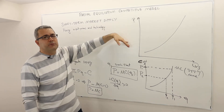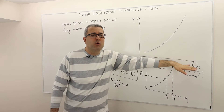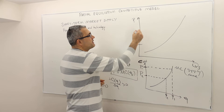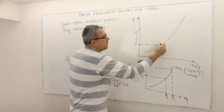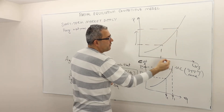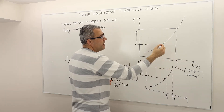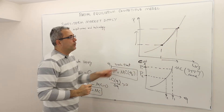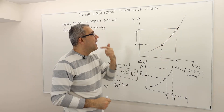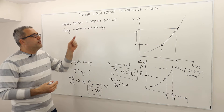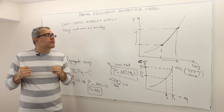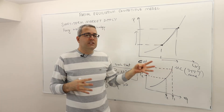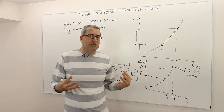When we draw a supply curve, we only vary the market price and see how total quantity changes. So if the market price increases from one level to another, the quantity supplied moves accordingly — we move along the supply curve from one point to another. However, when input prices change or when technology changes, it actually changes the marginal cost curve.